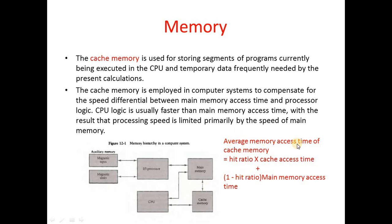The average memory access time formula is: hit ratio × cache access time + (1 − hit ratio) × main memory access time. What is hit ratio? If we need data and we find it in cache, that is a hit; if not, it is a miss. Hit ratio = number of cache hits / total number of memory inquiries.